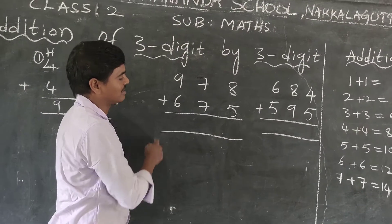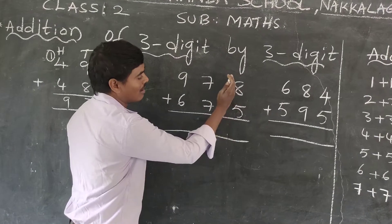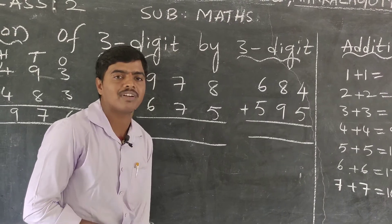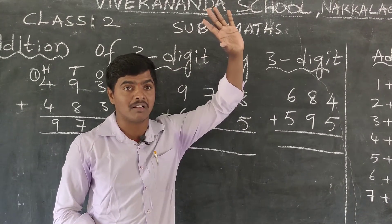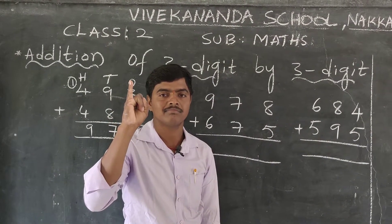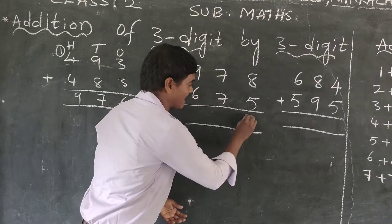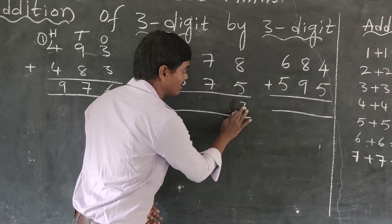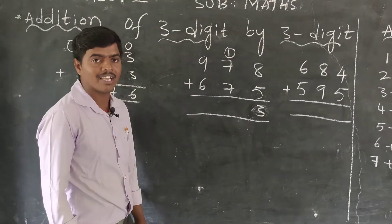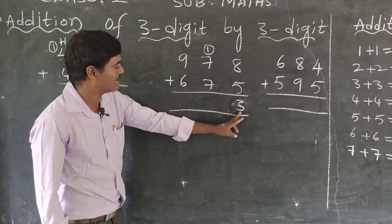Next example. First we do the ones place. Ones place: 8+5. Keep 8 in mind — which number are we adding? 5. So after 8: 9, 10, 11, 12, 13. The answer is 13. Write down only 3 here, and carry 1.